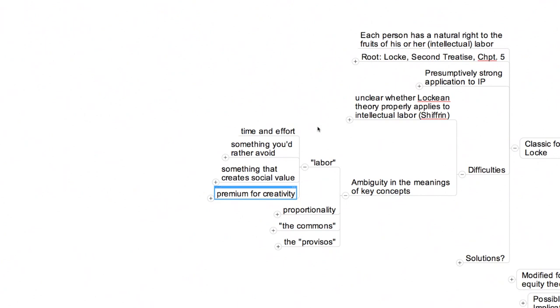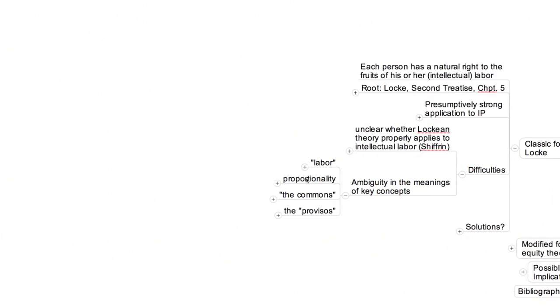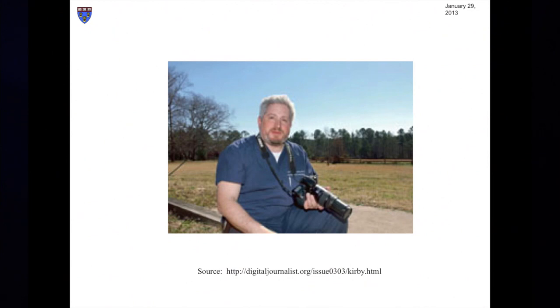Here's another challenge. An important dimension of Locke's argument is that the magnitude of the reward or the property right acquired by our laborer should be proportional to the amount of labor he or she has invested. But how do you decide how large a reward or property right is appropriate? An illustration. Scott Lieberman is a cardiologist who lives in Tyler, Texas. He's long been fascinated by the space program and is an avid amateur photographer. On February 1st, 2003, Mr. Lieberman figured out that the space shuttle Columbia would pass over his home in East Texas around 9 o'clock in the morning on its way to a landing in Florida.